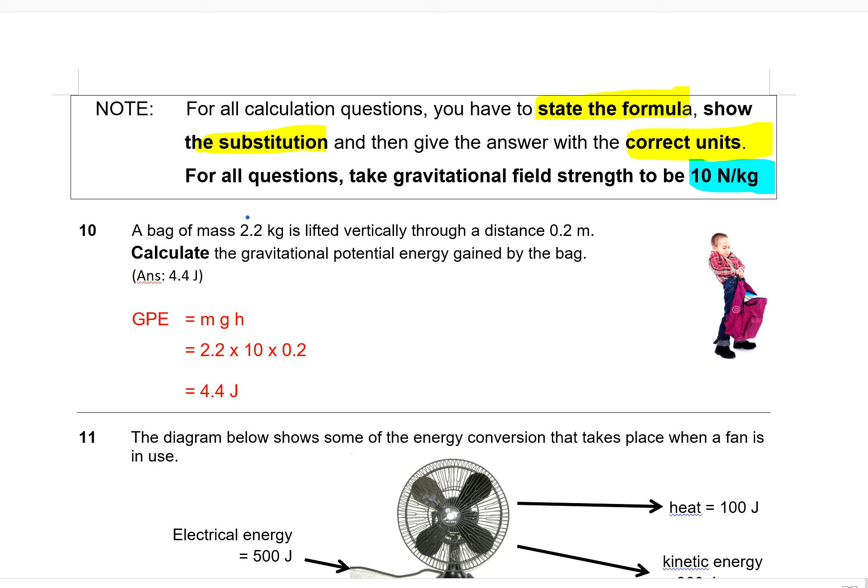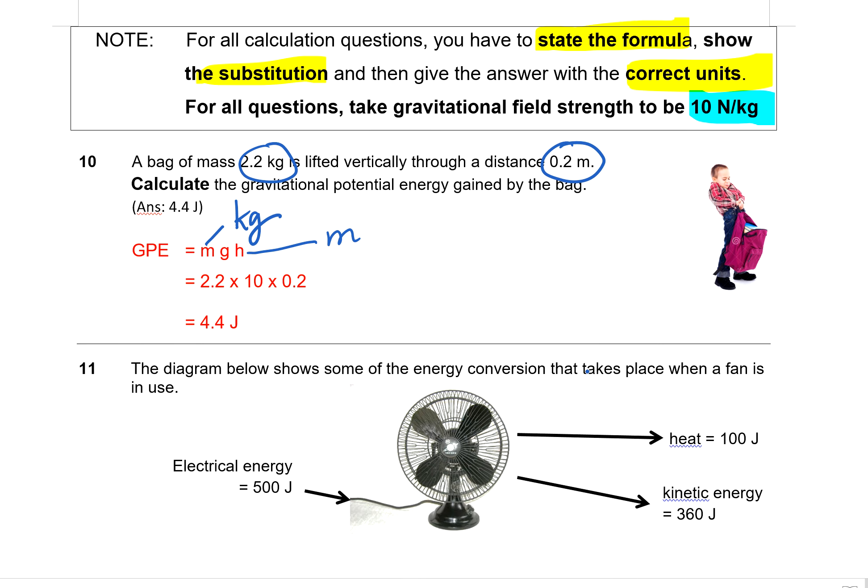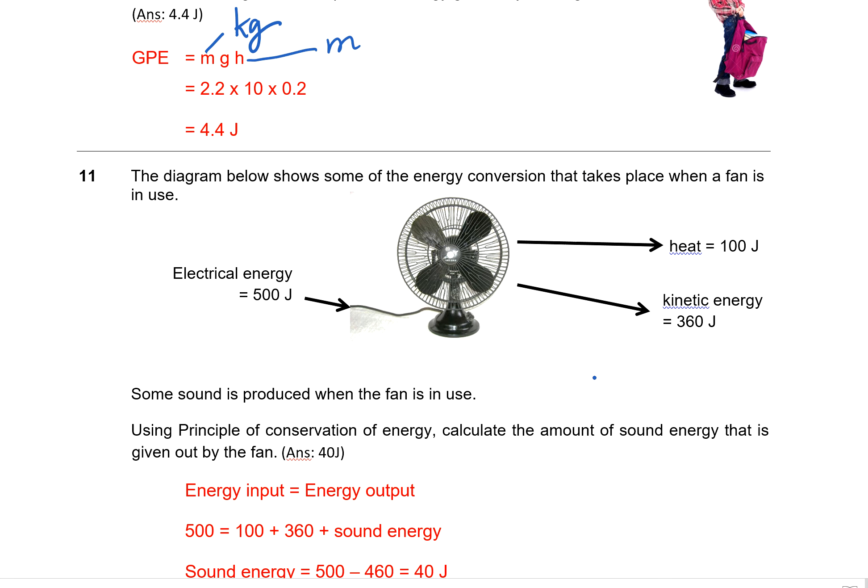Question 10. The mass of a bag is given. It is lifted 0.2 meters vertically upwards and the question asks for GPE. So write out the formula for gravitational potential energy, substitute the values. Remember mass in this case has to be in kilograms, so if the question gives you mass in grams, you need to do a conversion. And also just a reminder that height has to be in meters. If it's given in cm, you need to do conversion. But for question 10, there's no need for any conversion because all the correct units are given. So just substitute and you get 4.4 joules.